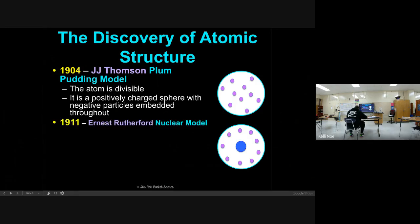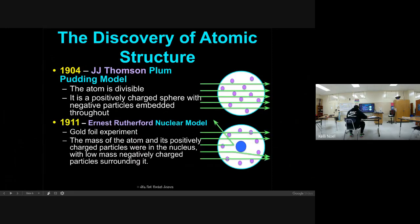In 1904, JJ Thompson, he was English, and he came up with the plum pudding model. He felt like they have this dessert or this food, like a pudding with chunks of plum in it. He said that the atom actually was divisible. The pudding part was still spherical in shape but was positively charged, and it had clumps of negative particles spread out through it.